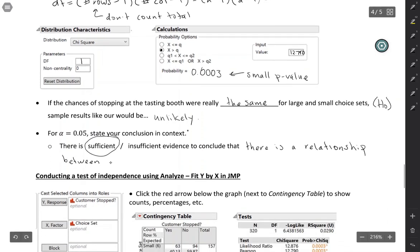between the size of the choice set and whether a customer stops. So we're concluding the alternative hypothesis.